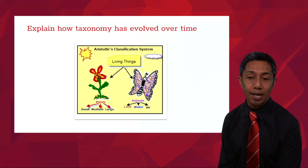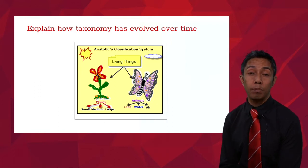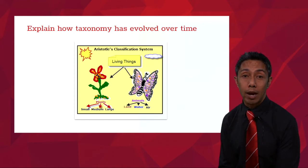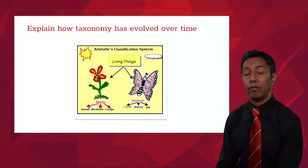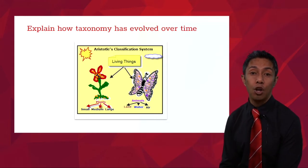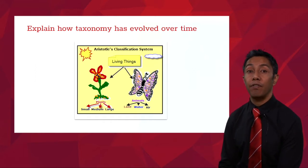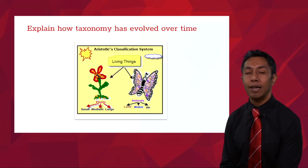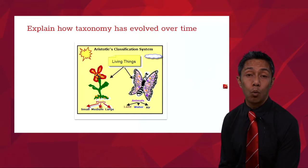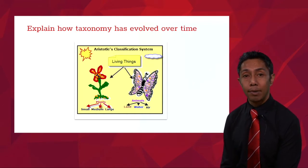Looking at the animal and vegetable portion of Aristotle's system, animals were classified by locomotion — whether they had legs and roamed on land, flew, or swam. Plants were classified as small, medium, or large. That classification system was used for quite a long time until Carl Linnaeus came along and developed the system we use today.